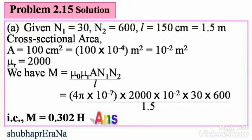Part A: N₁ = 30, N₂ = 600, L = 150 cm = 1.5 m, A = 100 cm² = 10⁻² m², μᵣ = 2000. M = μ₀ μᵣ A N₁ N₂ / L = 4π×10⁻⁷ × 2000 × 10⁻² × 30 × 600 / 1.5 = 0.302 Henry. This is the mutual inductance between the coils.